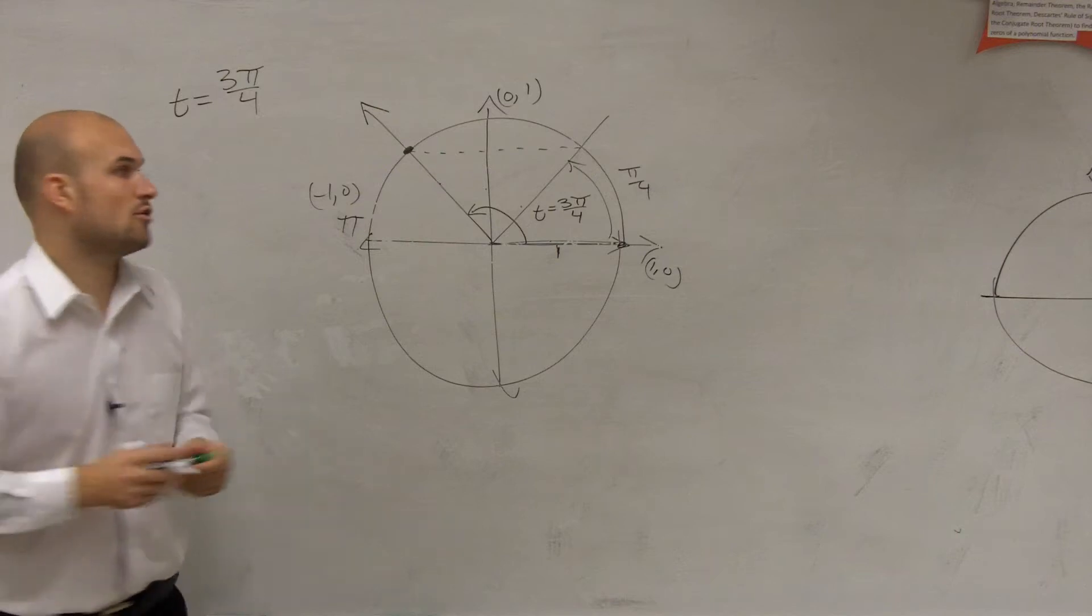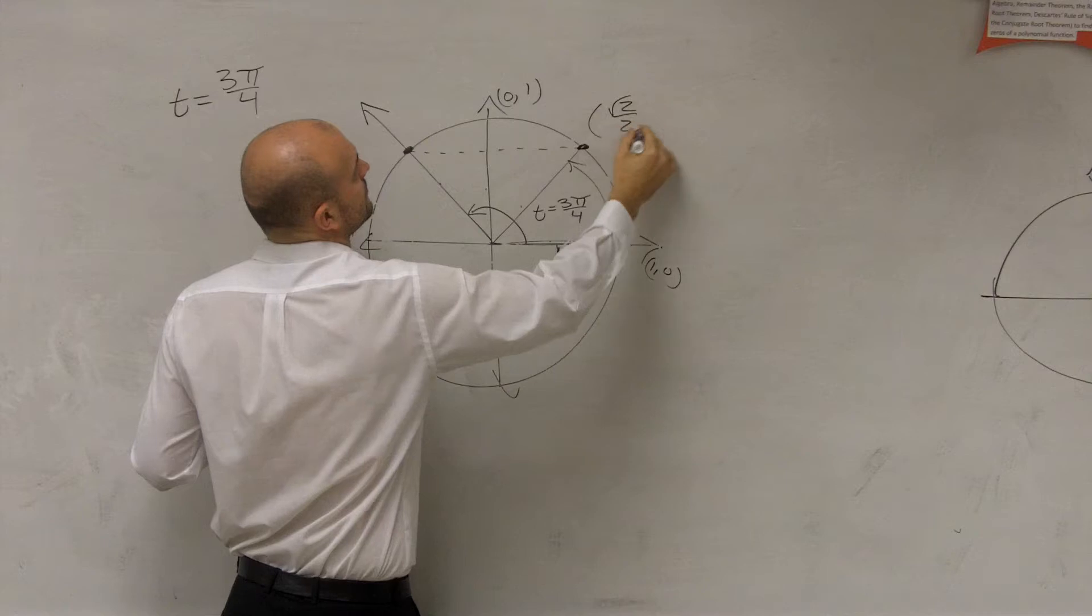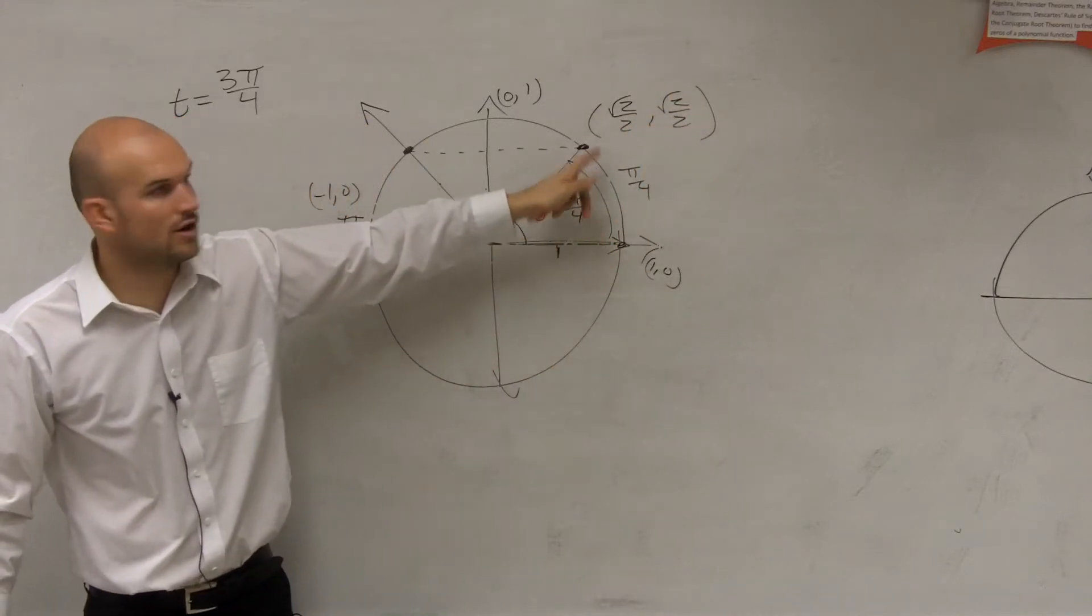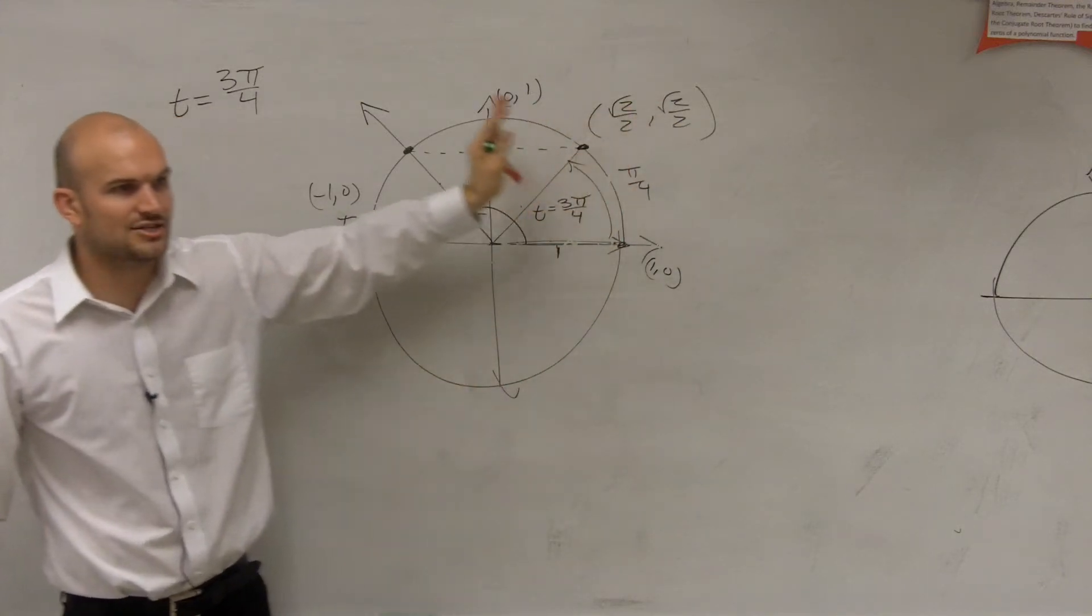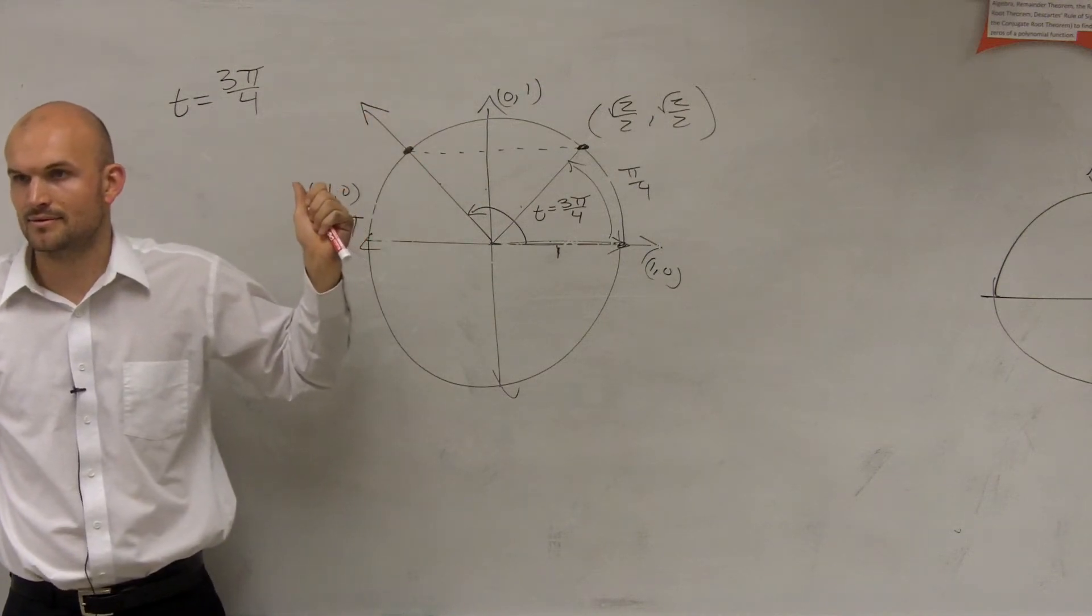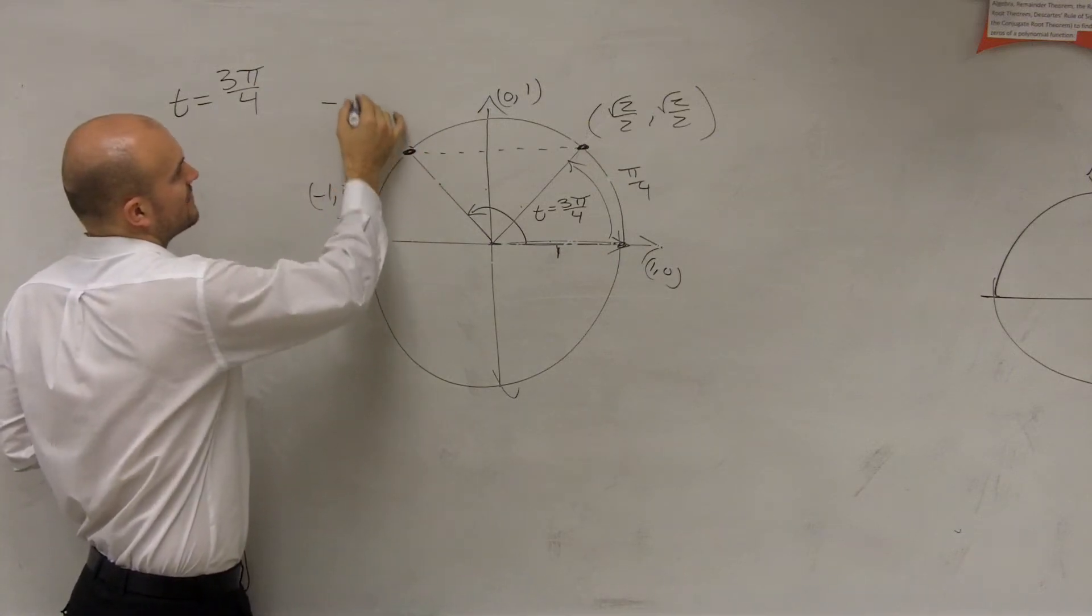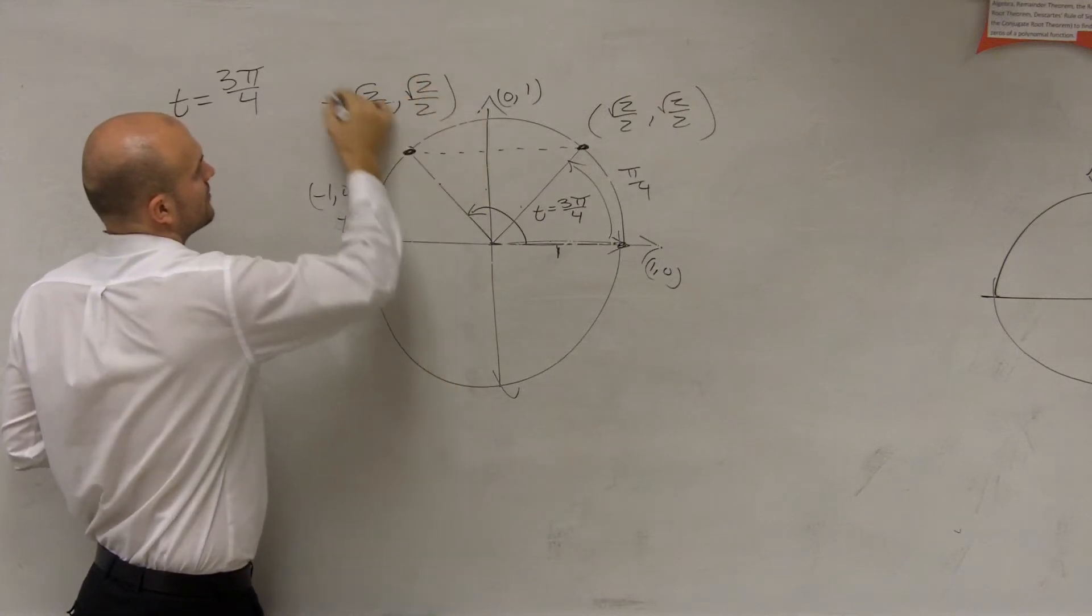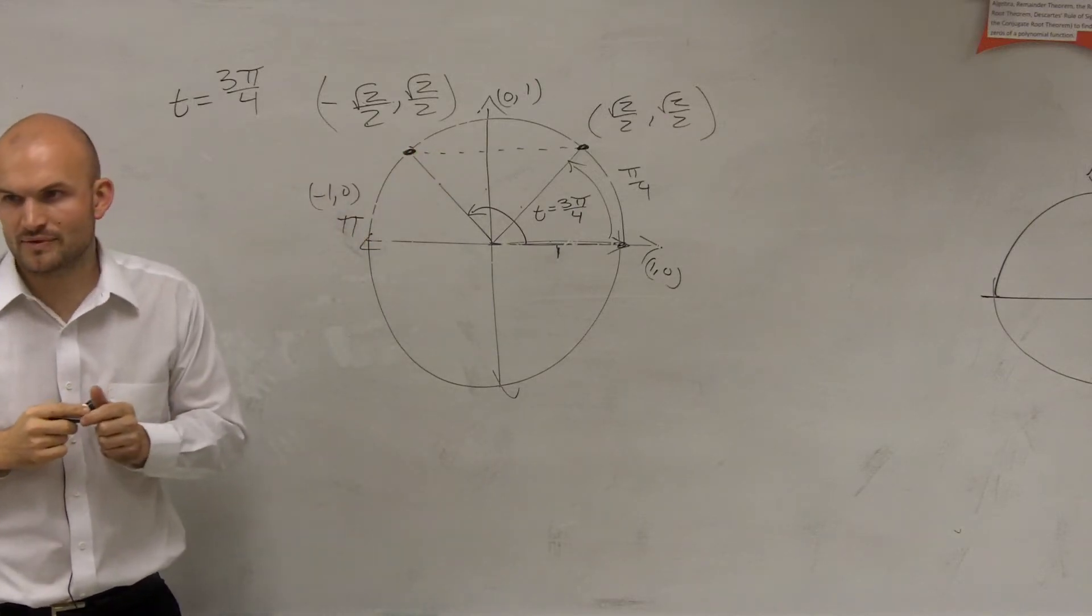Does anybody remember on our unit circle what that π/4 was? It's 45 degrees. So the coordinate point at π/4 is √2/2, √2/2. Since this is a direct reflection over the y-axis, what now becomes negative? My x-coordinate. So therefore, this coordinate point is -√2/2, √2/2.